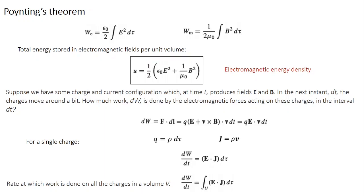Let's first choose a single charge and calculate the work done, then we can move on to calculate the total work done on all the charges. For a single charge, the work done dW is force multiplied by the corresponding displacement. From the Lorentz law, the electromagnetic force is Q times (E plus V cross B), where V is the velocity of the charge. The displacement dL can be written as V dT. Since V cross B is perpendicular to V, their dot product goes to zero, so the second term is cancelled. Therefore dW equals Q times E dot V dT.